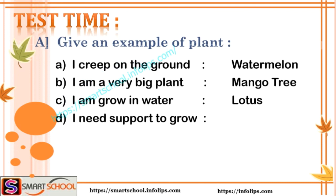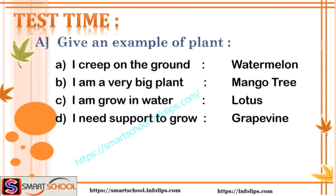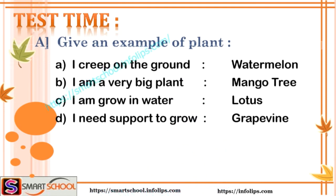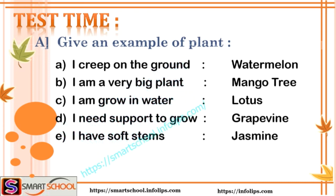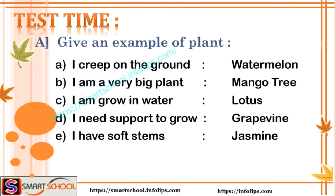Which plant needs support to grow? Grape vine — because grape vine is a climber and needs support to grow. Which plant has a soft stem? Jasmine — it's a jasmine.